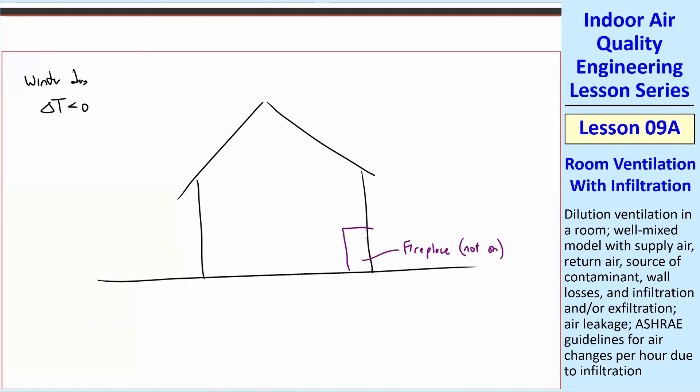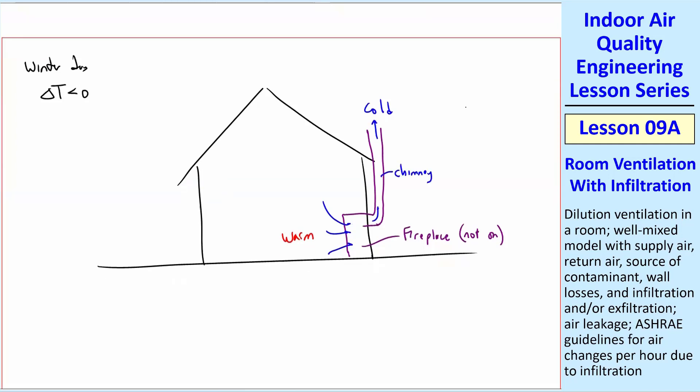The problem with the fireplace is that it has a chimney coming out of the fireplace. You have cold air up here and you have nice warm air in the house. And therefore, you're going to have a draft. It's going to draw air from the room and then out of the chimney. This is going to draw air out. This would be an exfiltration because it's drawing air out of the house. We also call this a draft or a stack effect.